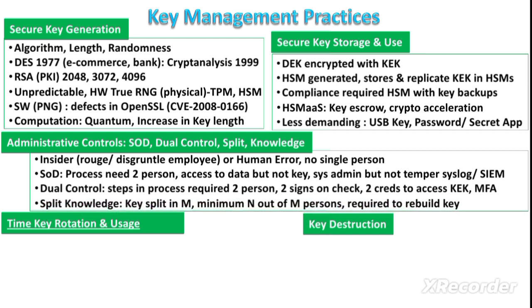In split knowledge, the key knowledge is divided among multiple persons. For example, the key is split among M number of people, and then N number of people out of those M are required to rebuild the key. For instance, if the key is split into 10 pieces allocated to different persons, a minimum of three out of those 10 persons are required to rebuild the key.